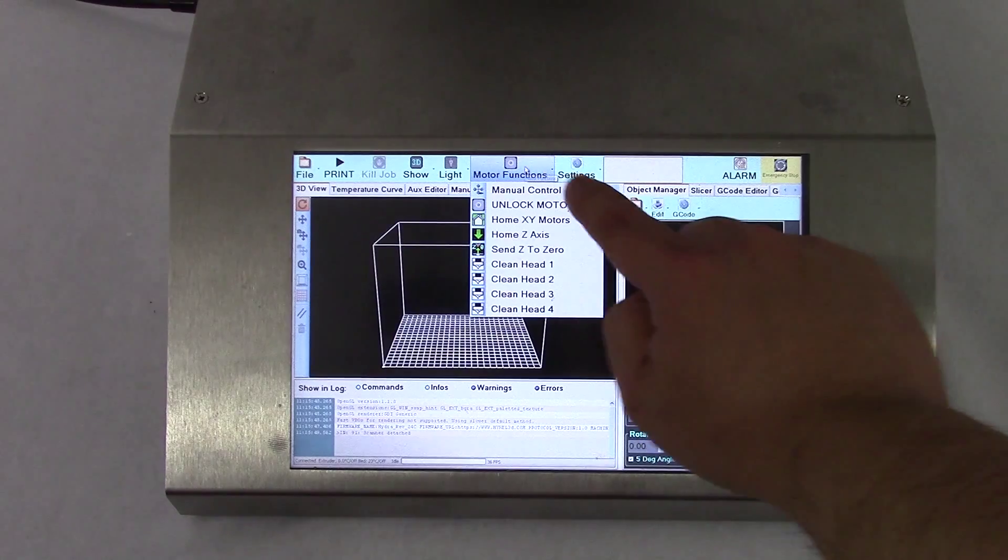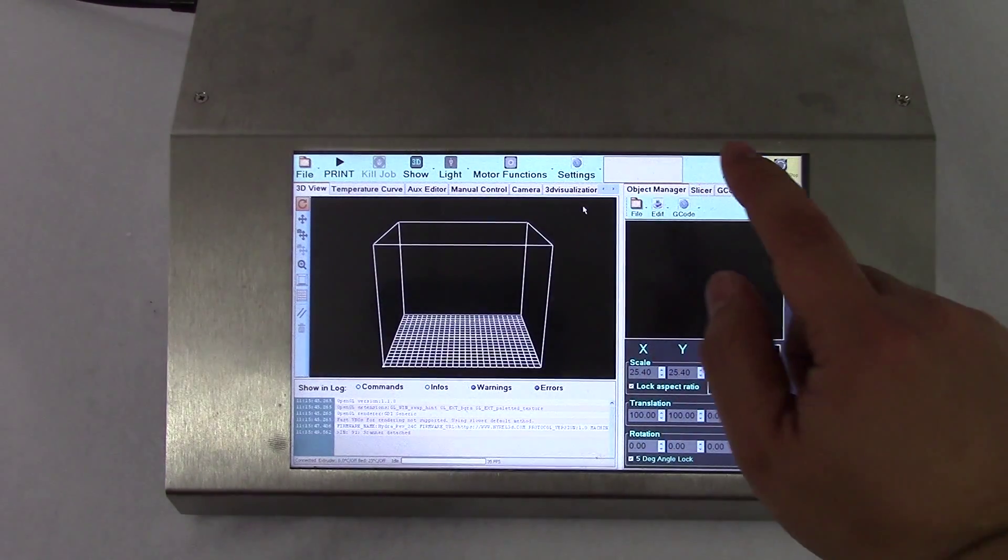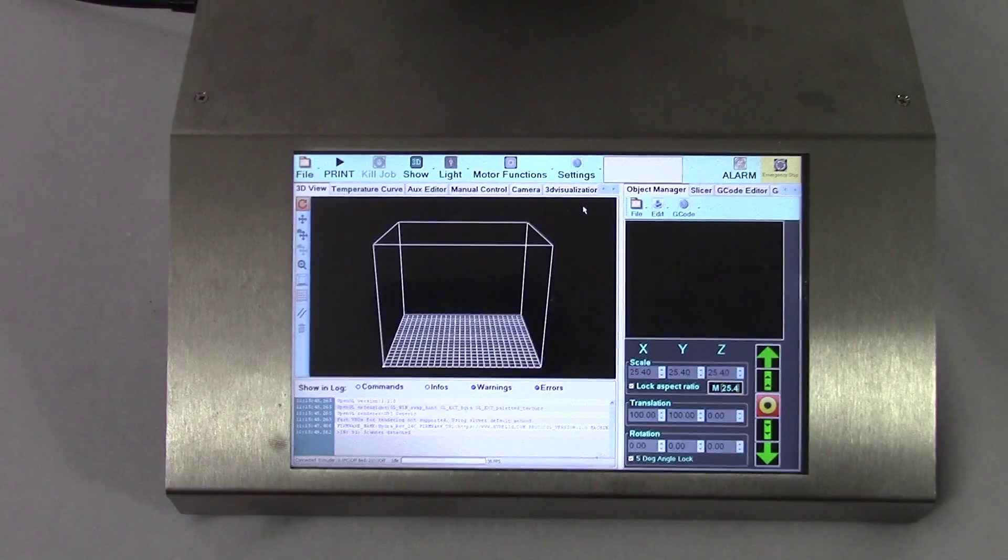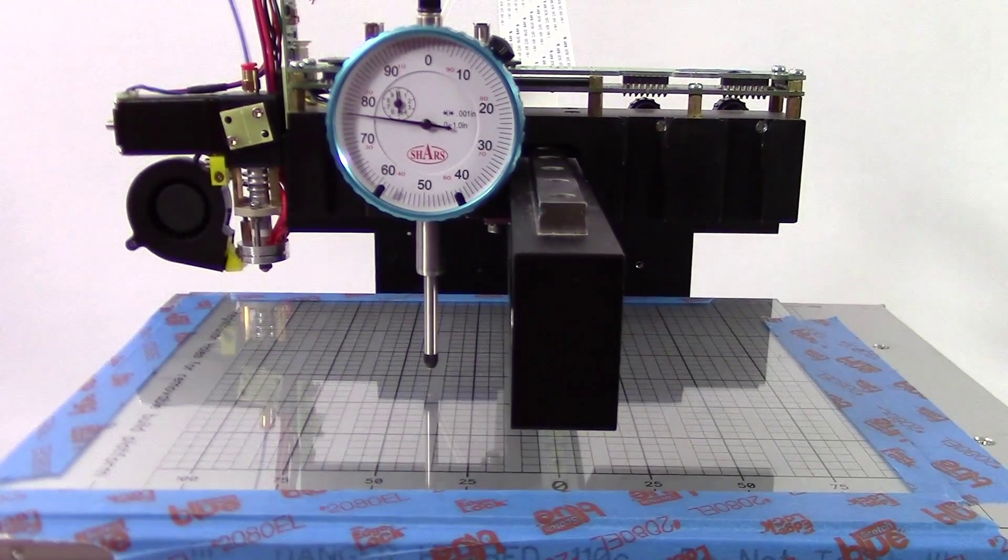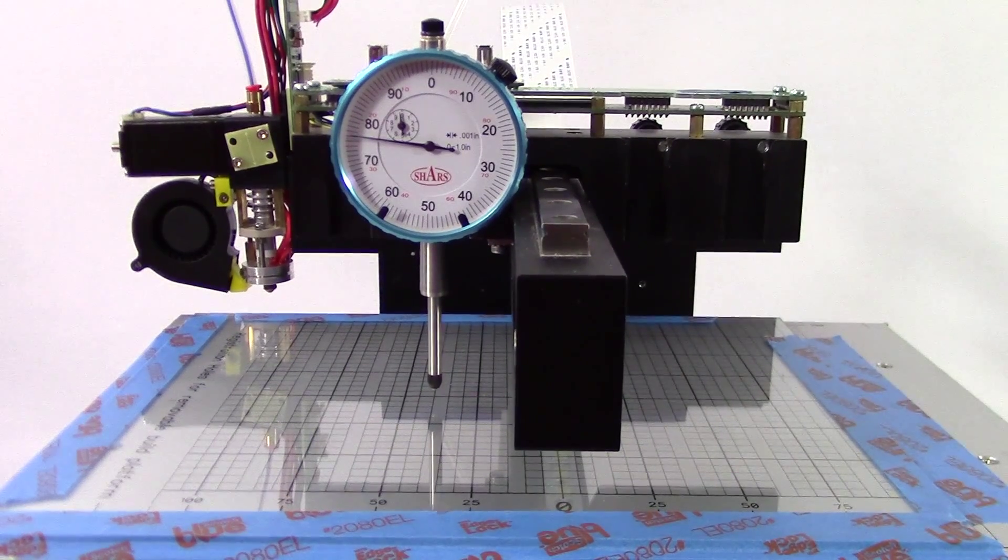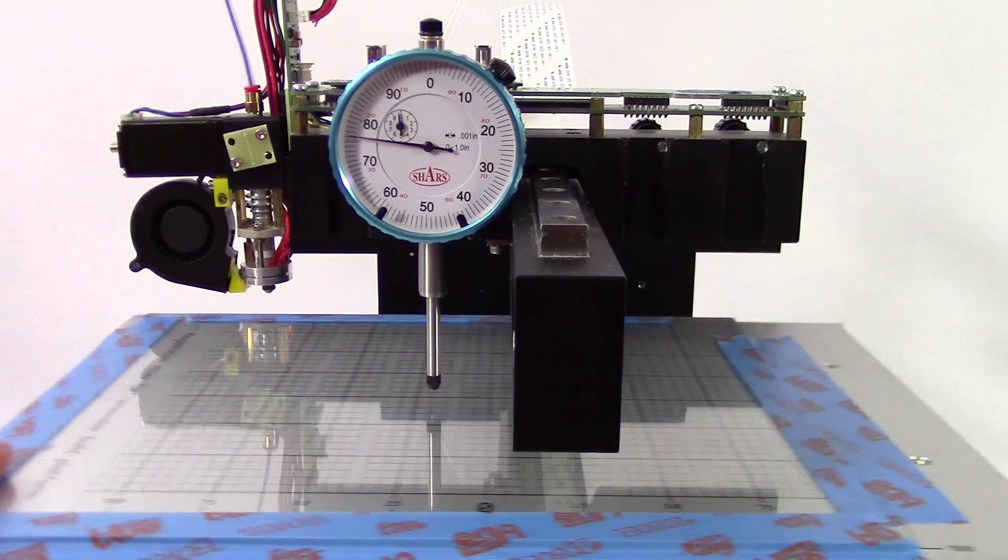Inside Repetier, click on Motor Functions, then Unlock Motors. This will allow you to freely position the dial gauge pin directly over the center supporting pylon. The center pylon is your reference point for the rest of the four adjustable pylons.